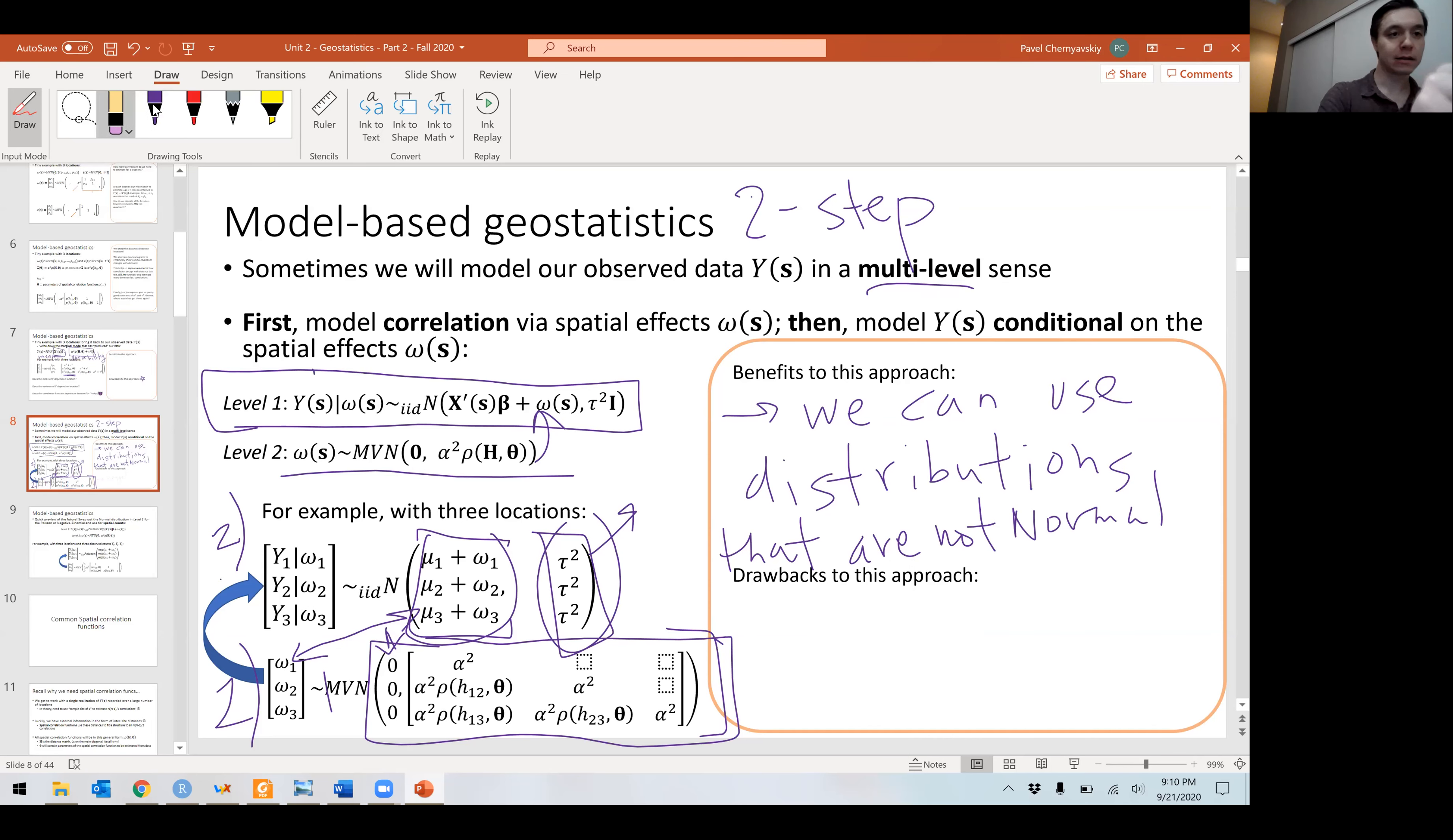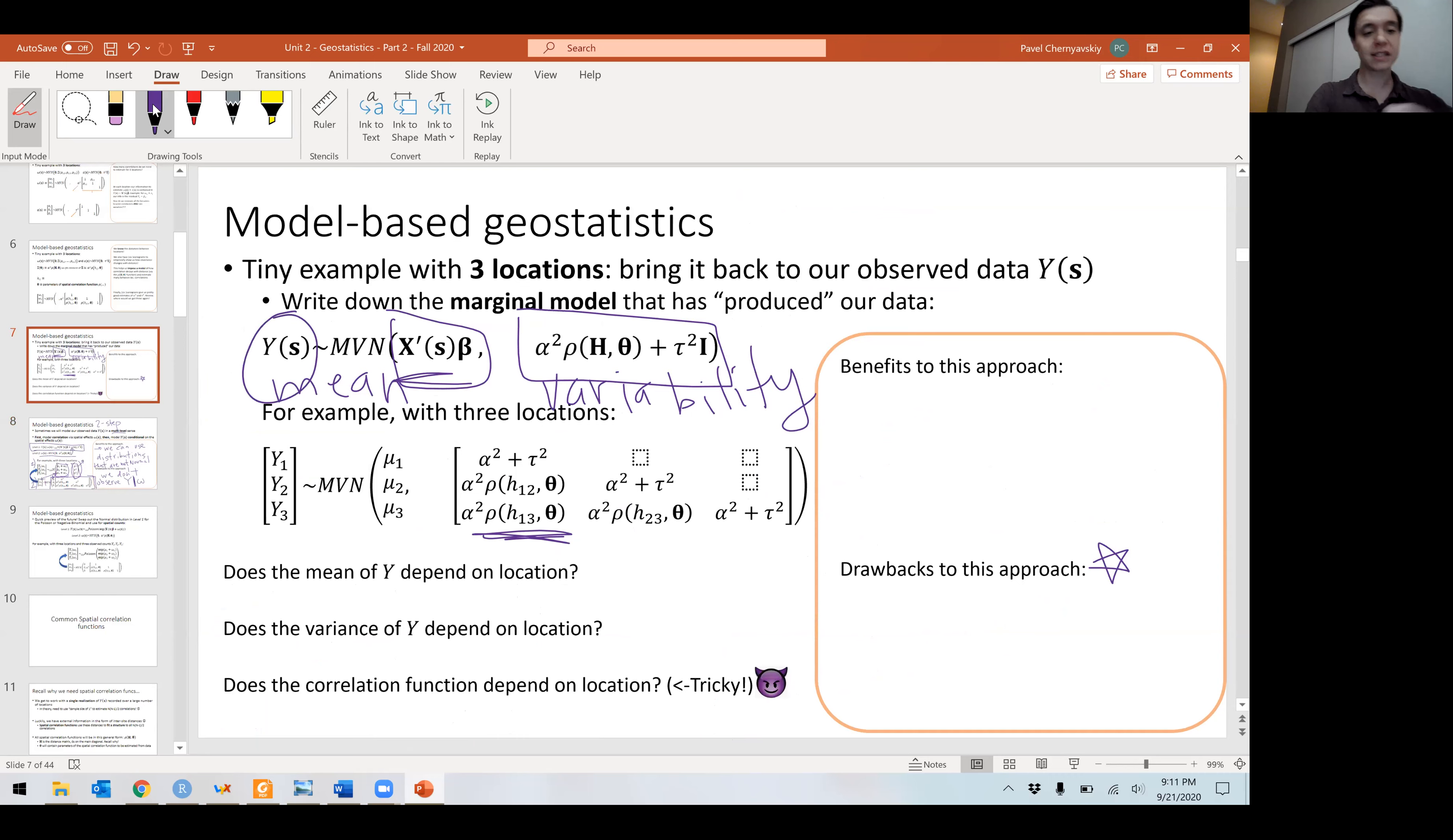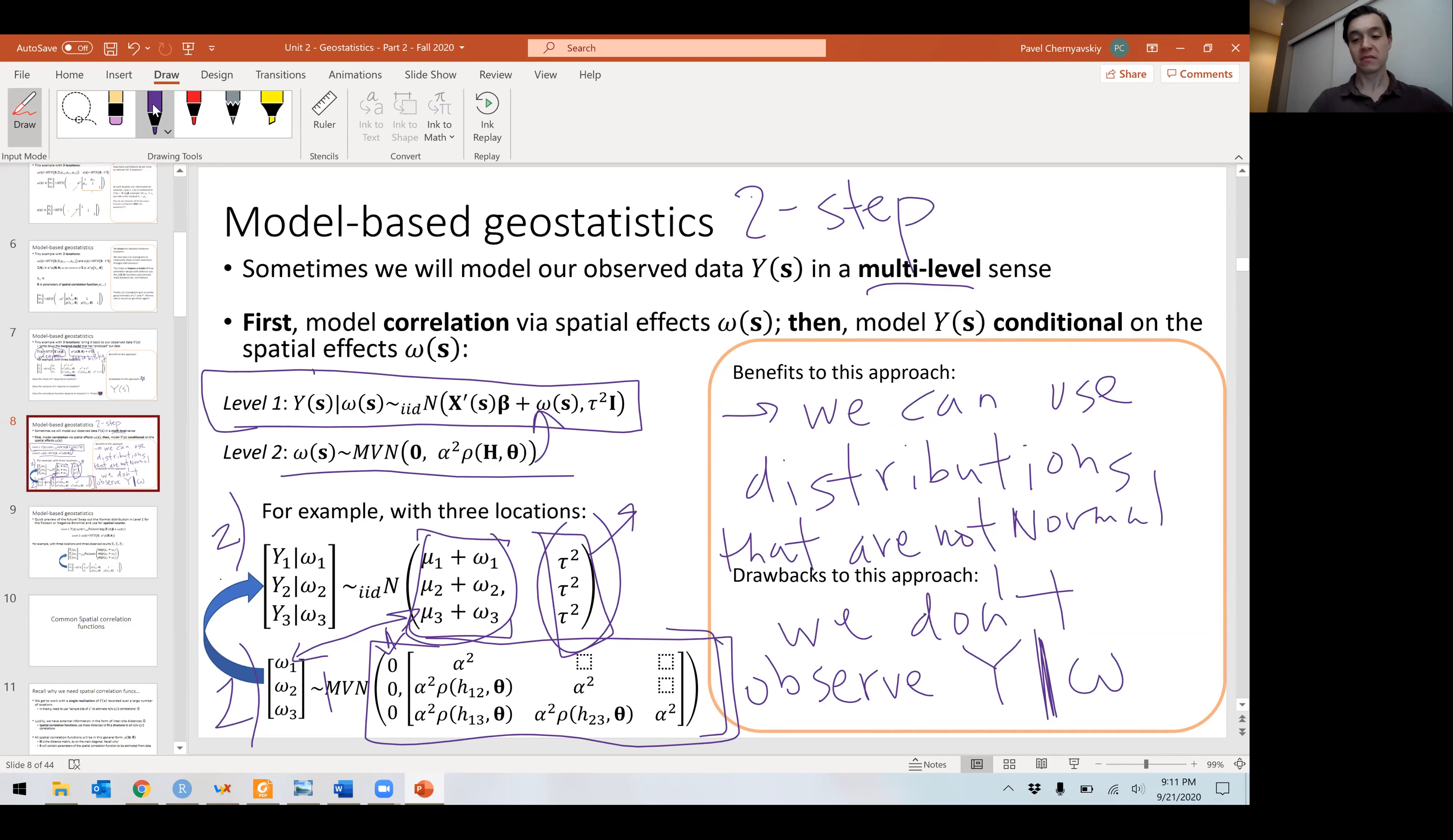In level one, all we have to do is plug these spatial effects into the mean of any distribution and we can model a spatially correlated outcome. The drawbacks to this: we don't observe our outcome conditional on the spatial effects. So formally, you should question what we're modeling here because what we observe is more consistent with this model characterization where we observe y and we model y. But in this conditional model characterization, we don't observe this quantity ever. It's just a modeling tool.